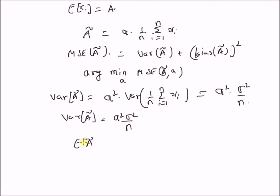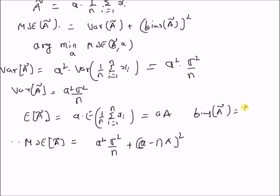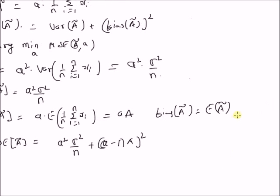The expectation of ã is a times the expectation of the sample mean, which is (1/n) Σ xi. The expectation of the sample mean equals the expectation of xi, which is a. Therefore, E[ã] = a × a = a². The bias of ã is E[ã] minus the true value a, which equals a² - a = (a - 1)a. Therefore, the MSE of ã is a²σ²/n + [(a - 1)a]².